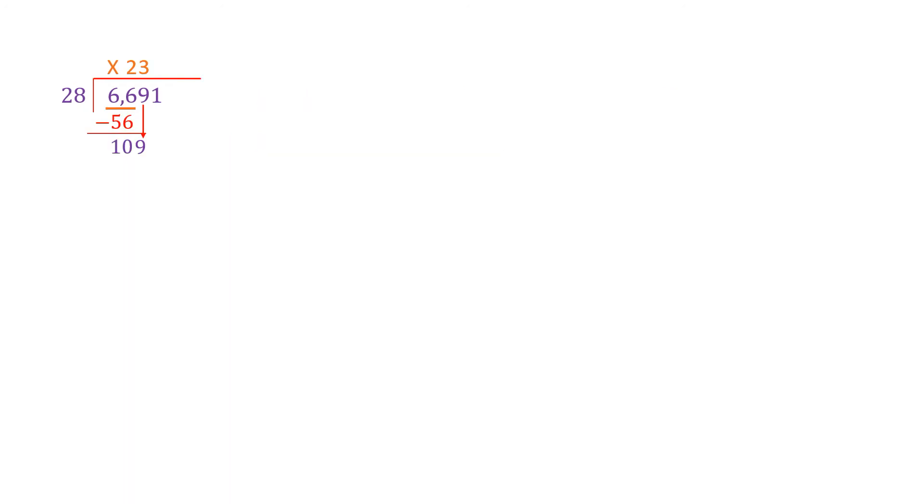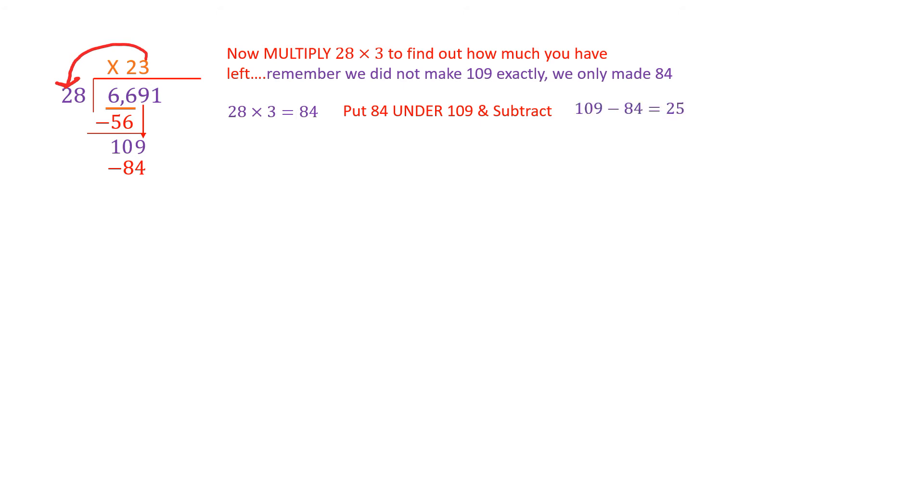I already know 28 times 3 is 84, so I'll try that. But I'm going to try 28 times 4 too. So 28 times 3 is 84. 28 times 4 is 112, so it goes too far. Just barely past 109, but still I can't use it, so I have to use 28 times 3. So how many times does 28 go into 109 without going over? The answer is 3. Where do I put the 3? I put the 3 above the 9 that I brought down to make 109. Now we're going to do the same process. We're going to multiply 28 times 3 to figure out how much we have left.